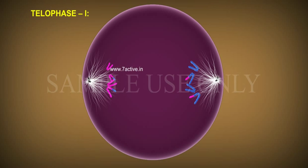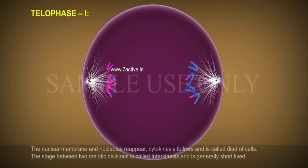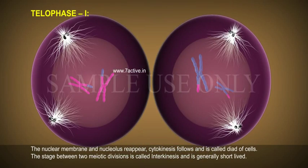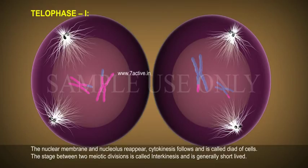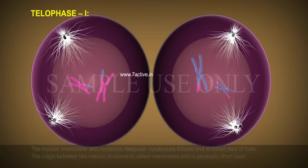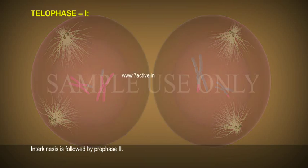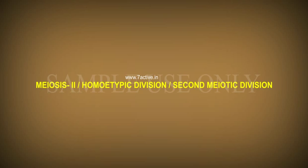Telophase 1. The nuclear membrane and nucleolus appear. Cytokinesis follows and is called dyad of cells. The stage between two meiotic divisions is called interkinesis and is generally short-lived. Interkinesis is followed by prophase 2, meiosis 2, also known as homotypic division or second meiotic division.